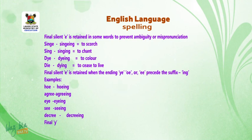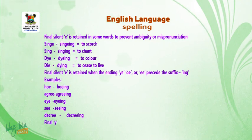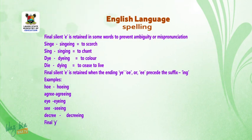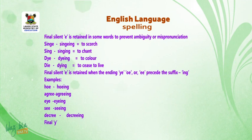Final silent E is retained when the ending Y-E, O-E, or E-E precedes the suffix -ING. Examples: hoe — hoeing, agree — agreeing, see — seeing, decree — decreeing.